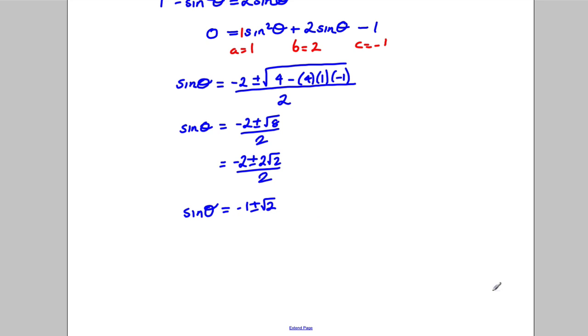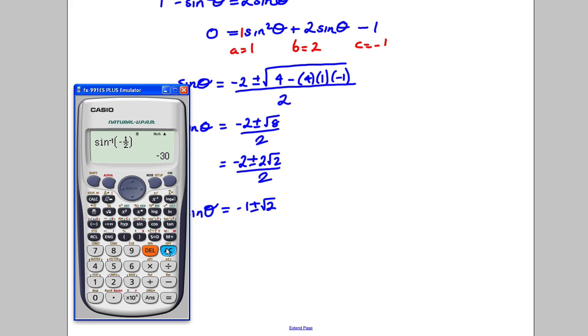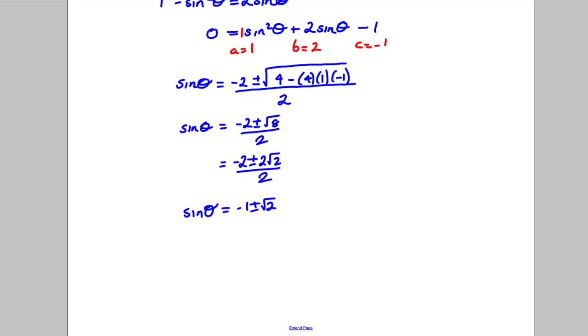So sin θ could be any of those things. Now it's worth getting the calculator out. If it was -1 - √2, you'd get -2.41, which you can't have a solution because sin θ has to be between one and negative one. So sin θ = -1 - √2, you're going to ignore, there's no solutions.